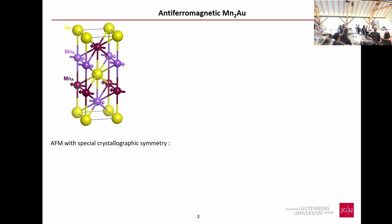First, I'd like to give a brief introduction about the antiferromagnetic material we work on: Mn₂Au. It is an antiferromagnet with a very special crystallographic symmetry. It is a centrosymmetric compound where every gold atom can be considered the global inversion center. Within one unit cell, the central gold atom is the inversion center, and the magnetic sublattices — manganese A and manganese B — form inversion partners with respect to this global inversion center.